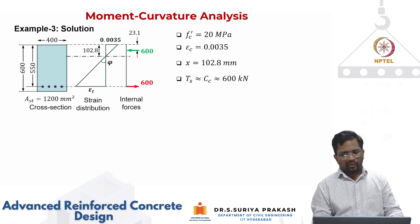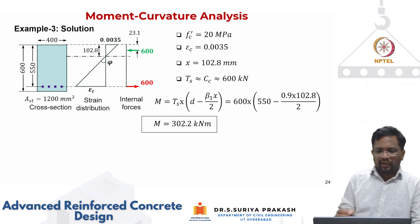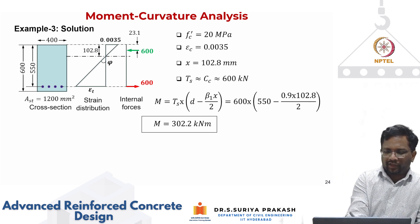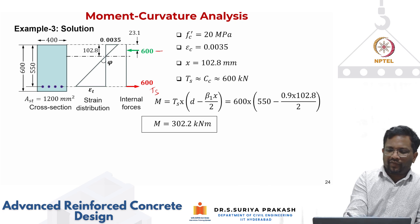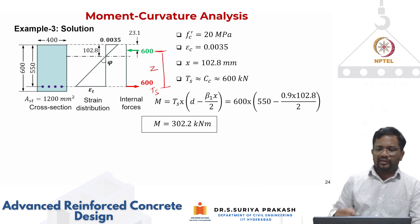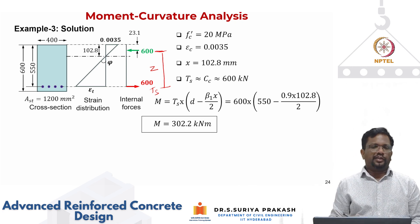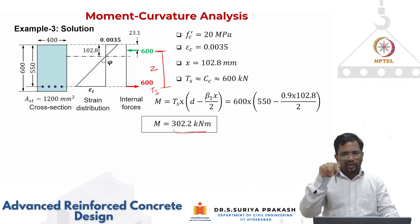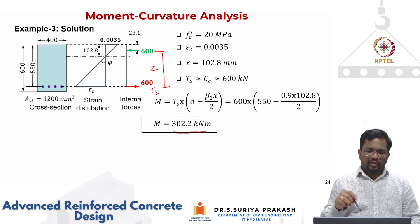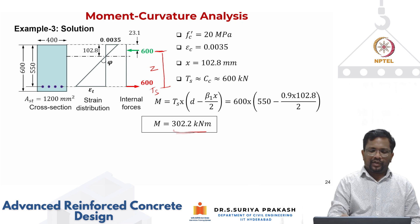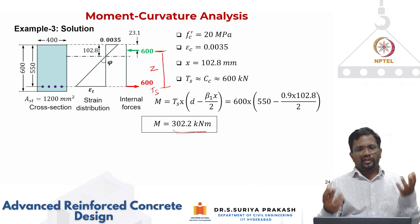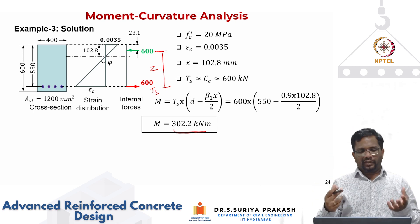With equilibrium satisfied, we calculate the moment resistance by taking moments about C_c. The lever arm z is the effective depth minus beta_1 × x divided by 2. Substituting gives a moment resistance of 302 kNm. Comparing: for f'c of 40 MPa with the same section and reinforcement ratio, the moment resistance was 316 kNm. So by reducing concrete strength from 40 to 20 MPa, we still get 302 kNm — not a big difference.